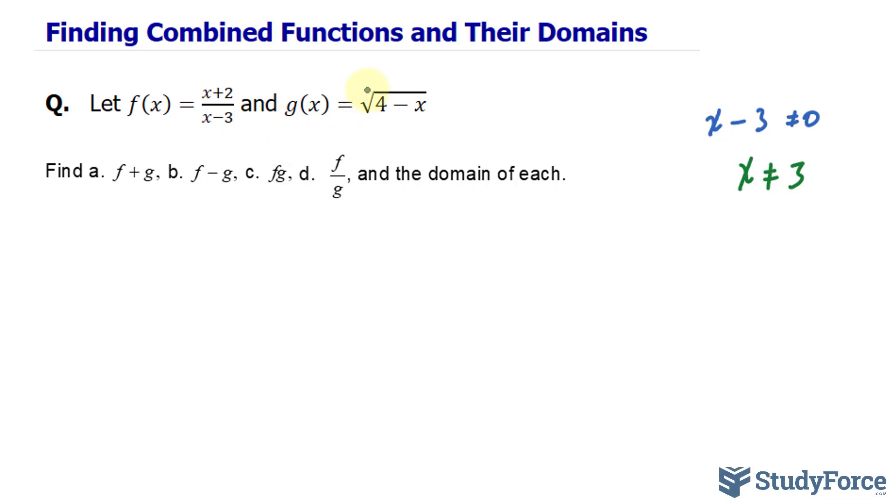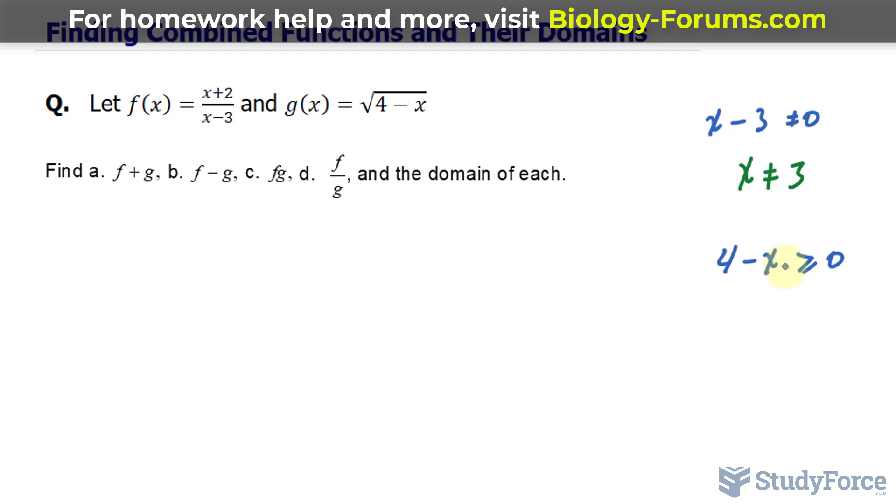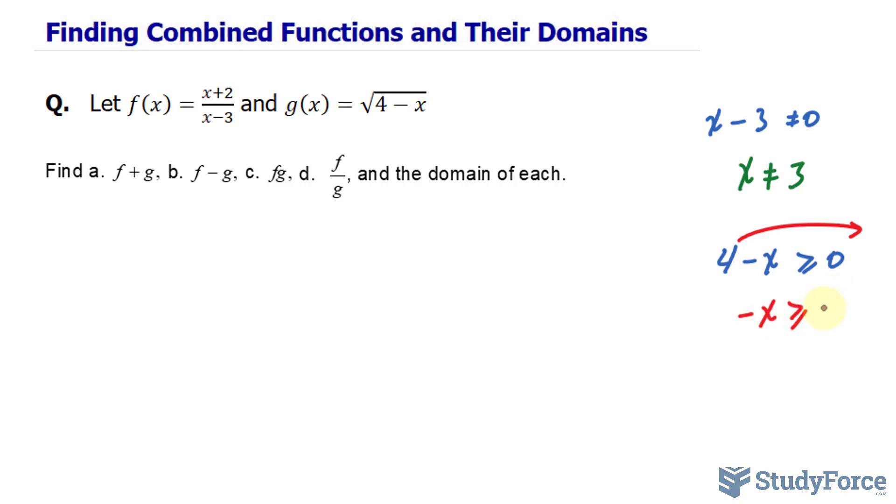What about g? For g, we have a radical, and specifically that's a square root. Anything less than zero in the radicand will give you no real output. For this reason, we can write down 4 minus x must be greater or equal to zero. And solving for x, bringing that over, we get minus x must be greater or equal to negative 4. And then dividing both sides by negative 1 flips the inequality, and we have x must be less than or equal to 4.